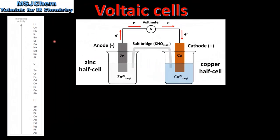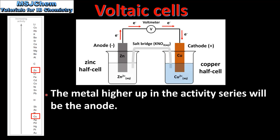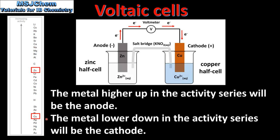Next we'll look at how to use the activity series to determine which will be the anode and which will be the cathode in a Voltaic cell. In this Voltaic cell the zinc half cell is the anode and the copper half cell is the cathode. If we look at the activity series we can see that zinc is higher up in the series than copper. The metal higher up in the activity series will be the anode, which in this Voltaic cell is zinc, and the metal lower down will be the cathode, which in this example is copper.